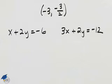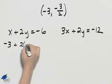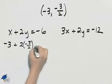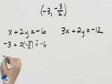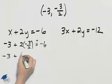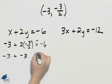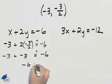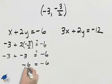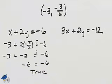To determine if the point negative three, negative three halves satisfies the system, we will substitute in for x and y — x is negative three and y is negative three halves. We want to see if that equals negative six for the first equation. Evaluating, we get negative three plus the two's cancel, giving negative three. Negative three plus negative three is negative six, which equals negative six. That is a true statement.